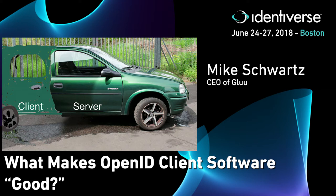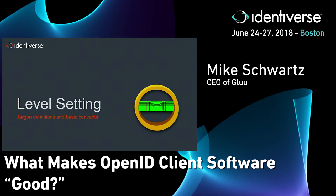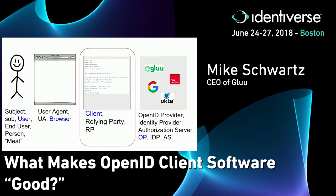Let me level set a little bit. Our industry has a ton of jargon — a lot of jargon for the same stuff. In OpenID Connect, we might call the human the subject, the sub, or the user. I'm going to stick with 'user.' I actually like 'person' better, but everyone seems to know what 'user' means.